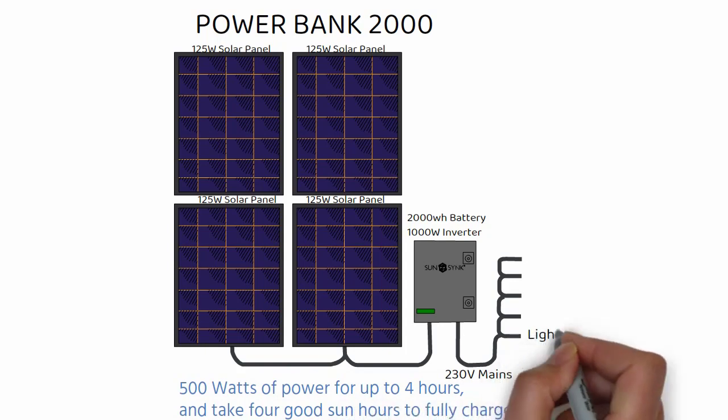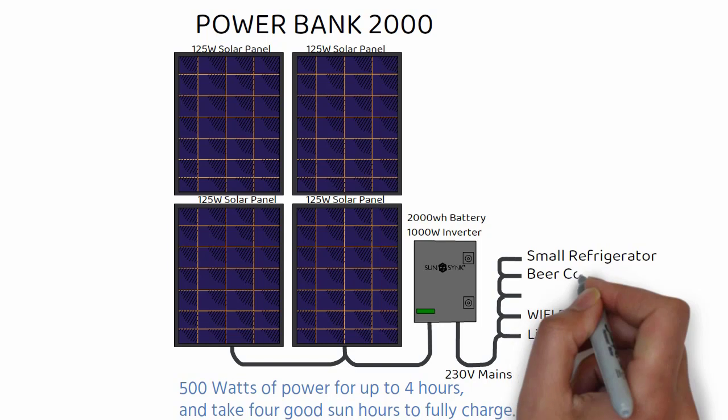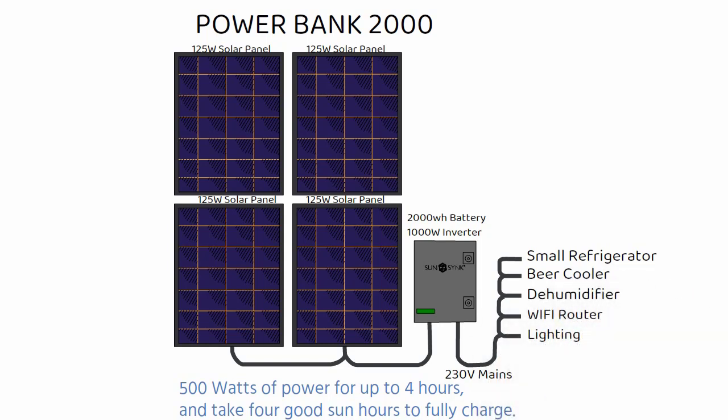As well as LED lighting, Wi-Fi router, mobile phone or laptop charger, it can also provide enough power to operate a small refrigerator, beer cooler or dehumidifier.